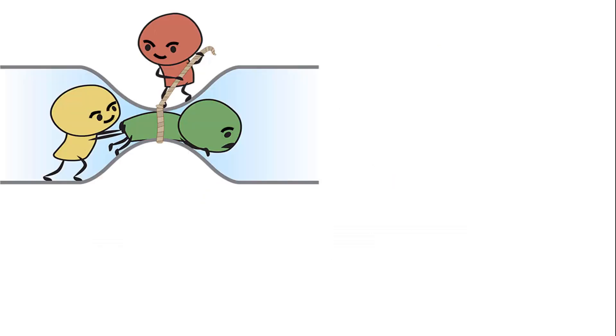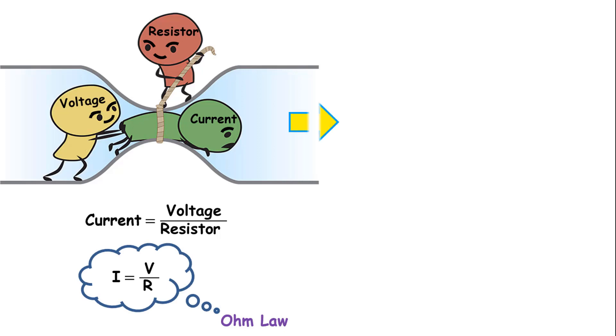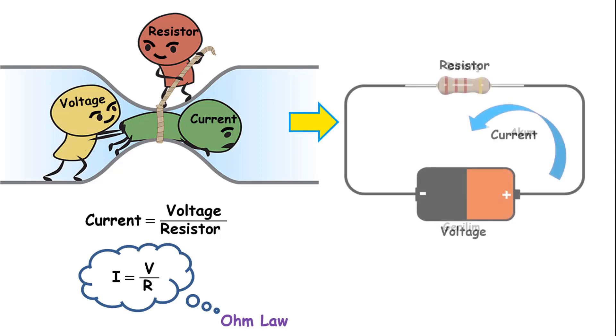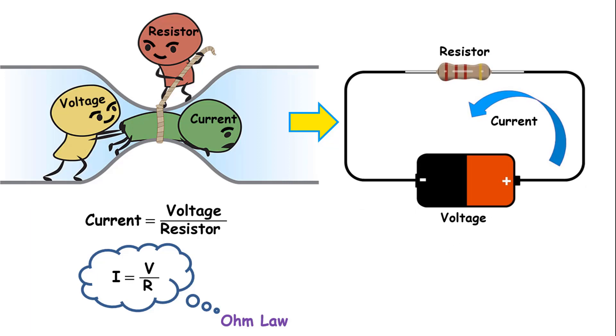To better understand the basic role of resistors in the circuit, we can analyze this figure. A current occurs as a result of the movement of electrons in an electrical circuit. The force that creates current by moving these electrons is voltage. It is the resistance that limits the current by reducing the flow of electrons.